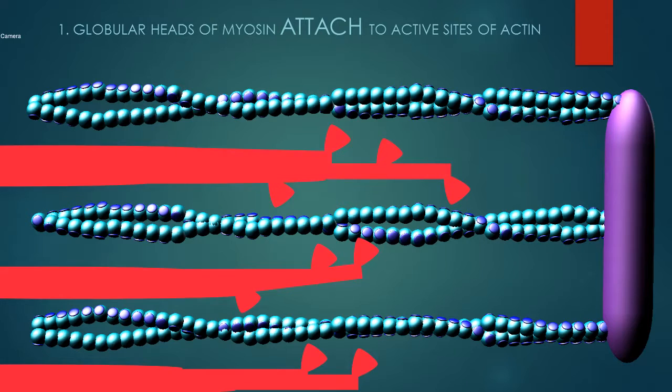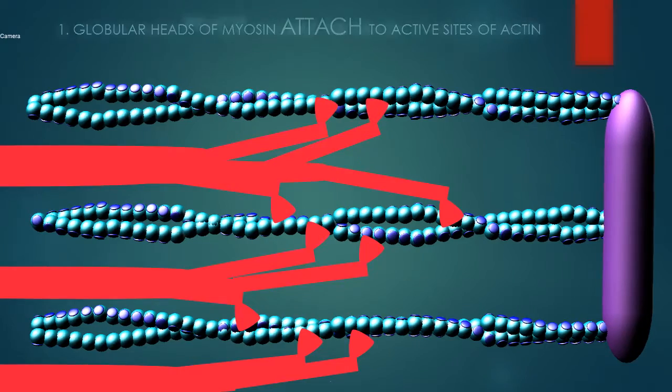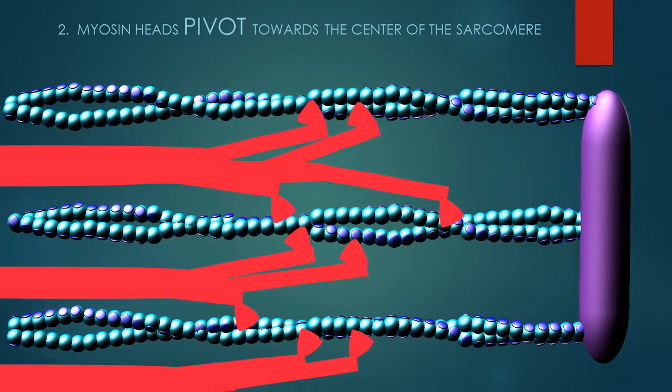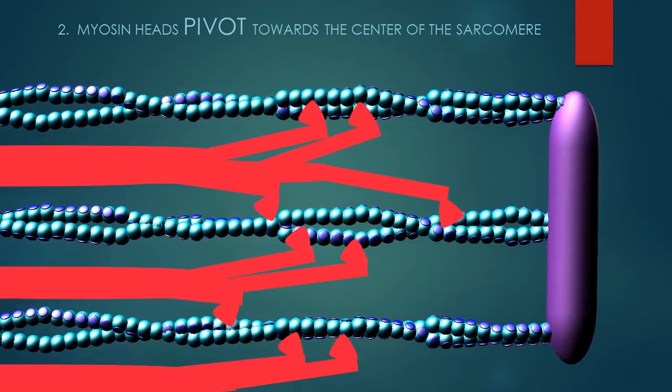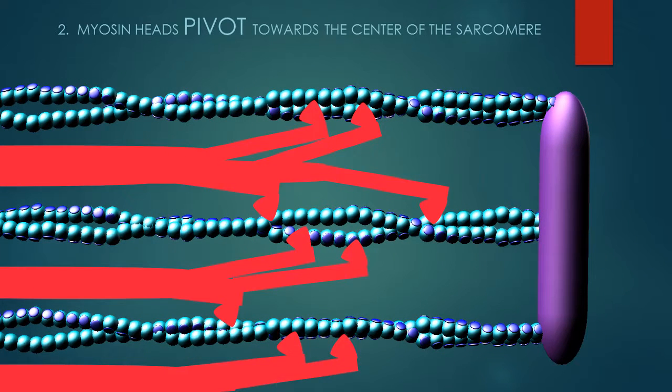First, the globular heads of myosin will attach to the active sites of actin. Second, these myosin molecules bend and pivot towards the center of the sarcomere. This shortens the sarcomere.